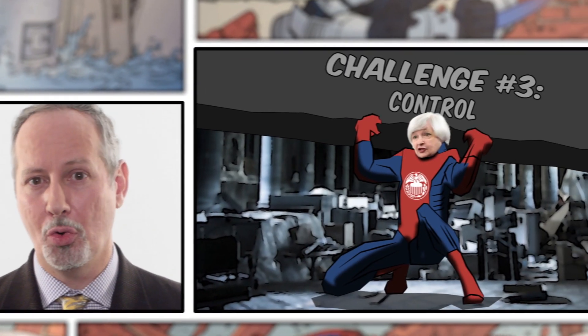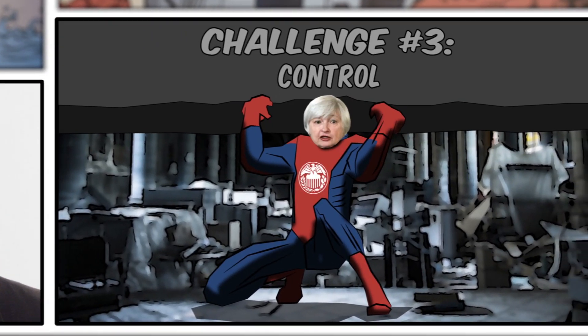And third, control. The Fed's control of the money supply is incomplete and imperfect. Many of its tools rely on other actors, such as banks. As we saw during the Great Recession, the banks stopped lending like they normally do, so some of the Fed's tools became less effective.